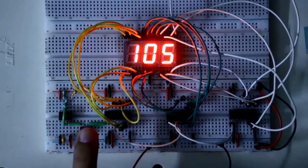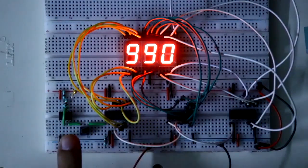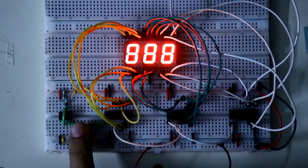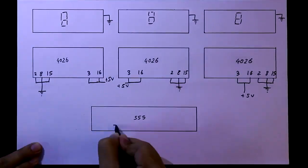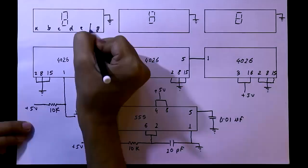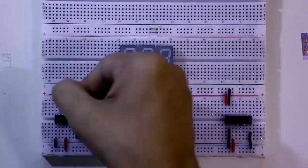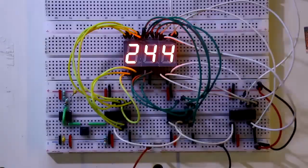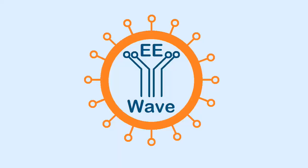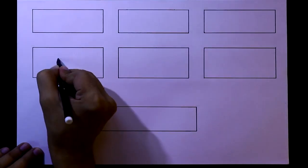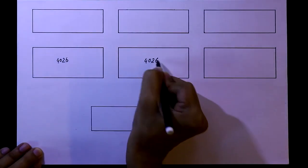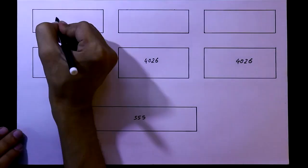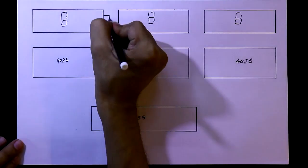Hello guys, in this video we are going to see how to generate a random number without a microcontroller. For this we need 3 pieces of 4026, 1 555 timer IC, and 3 pieces of common cathode 7-segment display.